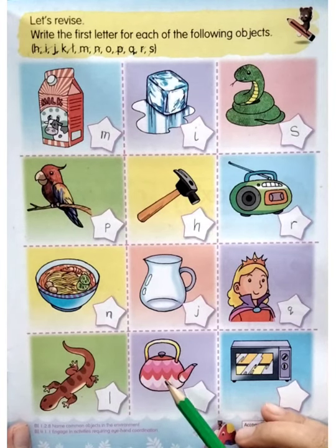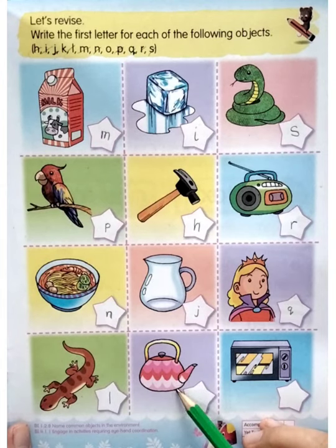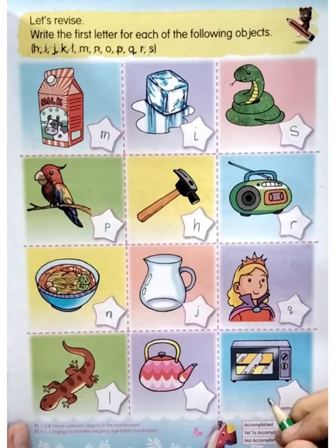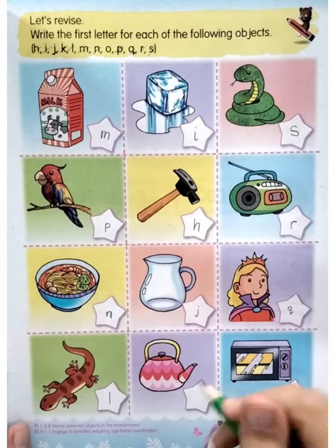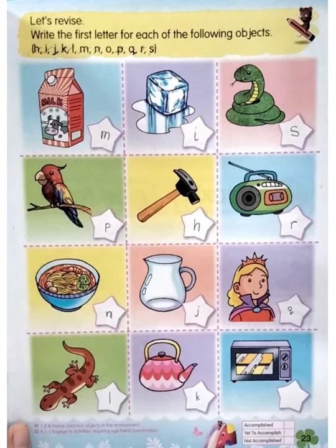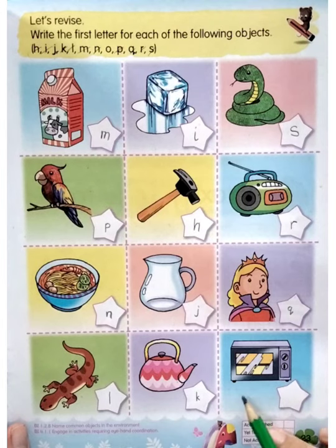Very good. Now look at this object — what object is that? Very good — this one is kettle. So what is the beginning letter of kettle? Of course — letter K. We're going to write letter K in here. K for kettle.